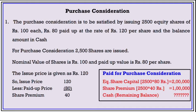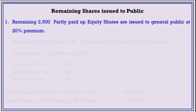So 2 lakh for capital, 1 lakh for share premium — this is the purchase consideration from equity shares. For remaining shares issued to the public: 2500 partly paid up equity shares are issued to the general public at Rs. 40 premium. Nominal value is Rs. 100, paid up value Rs. 80, and issue price Rs. 80 plus Rs. 40 premium.